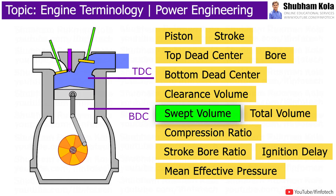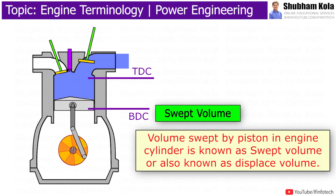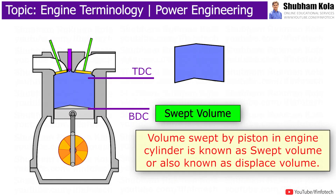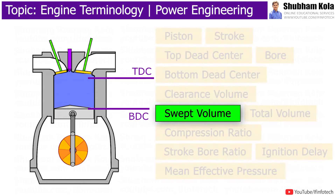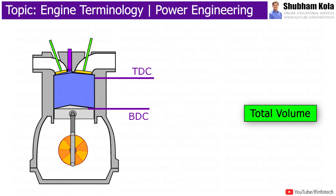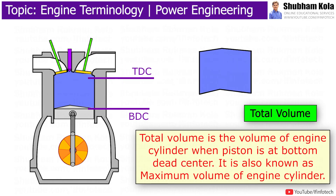The volume swept by the piston in the engine cylinder is known as swept volume, also known as displaced volume. The total volume is the volume of the engine cylinder when the piston is at bottom dead center. It is also known as the maximum volume of the cylinder.